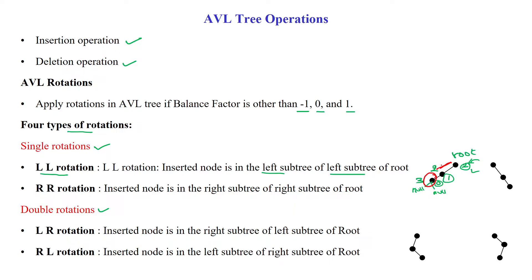The root node is not satisfying the AVL balance factor. This happened because the new node was added as a left child of the left subtree of the root. So in this case, we have to perform LL rotation.